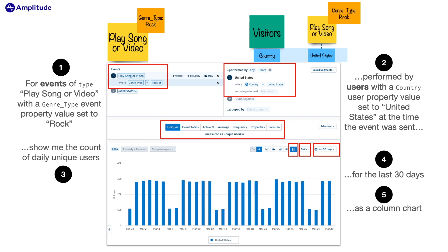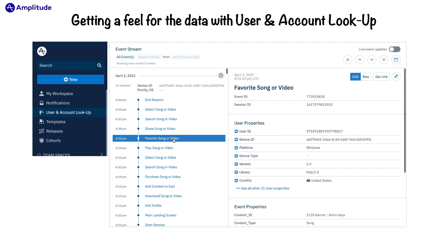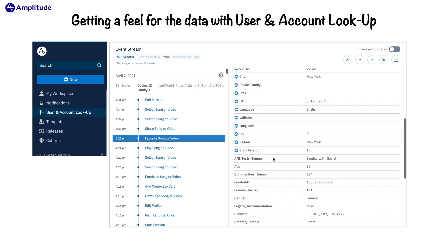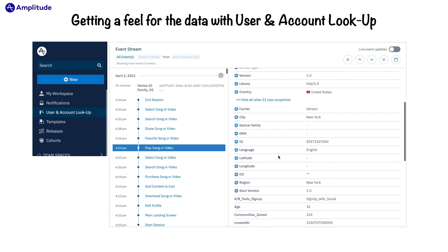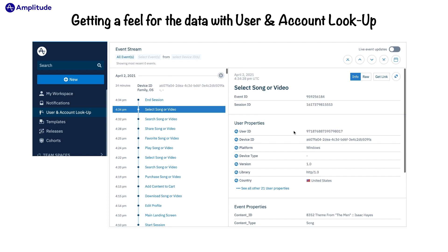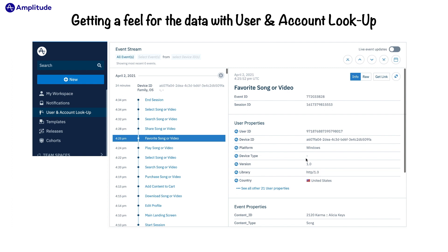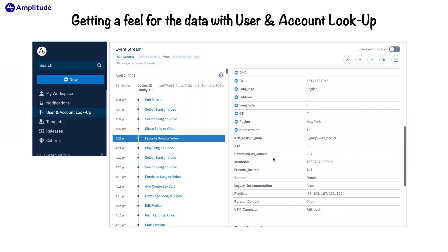Another great way to get a sense of how this works is by using user lookup, or account lookup if you have our accounts add-on. User lookup allows you to select a user and see the stream of events for a particular user. It is almost exactly like our sticky note exercise, but the events are listed vertically and in order in the left pane, and the information passed with each event appears in the right pane. Note how we can view the user properties describing the user and the device used when triggering this event, like country, SDK version, library, carrier, city, their playlist, along with event information.